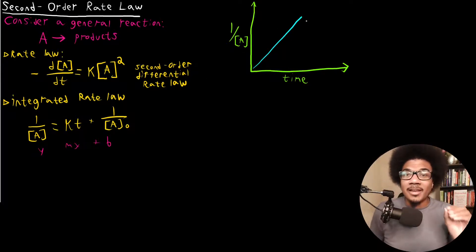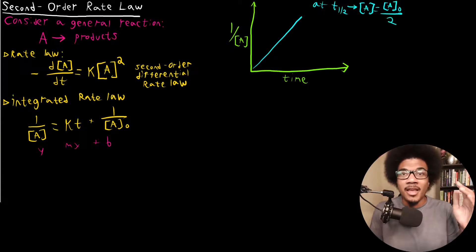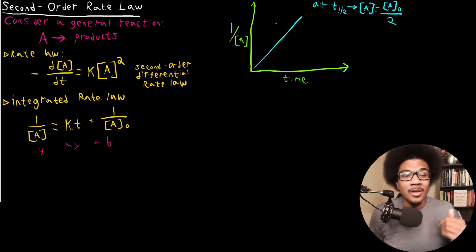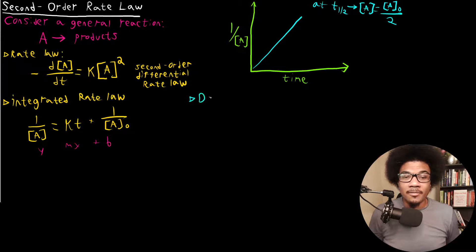Now, how would we get the half-life? Keep in mind that at the half-life t½, the concentration of our reactant is going to be half its initial concentration — A₀ over two. That is true regardless of whether it's first order, second order, or any other order. The only thing that changes is the equation for the integrated rate law. So we have to do the same thing we did for the first order rate law, but now plug into this integrated rate law to derive the half-life equation.